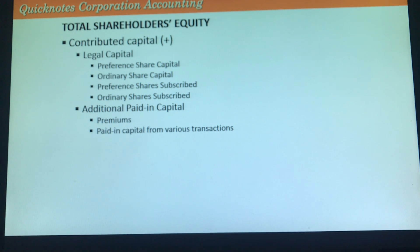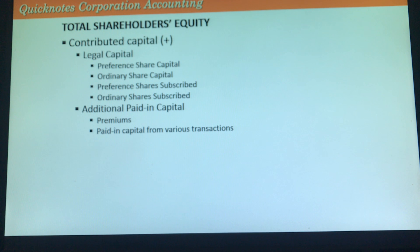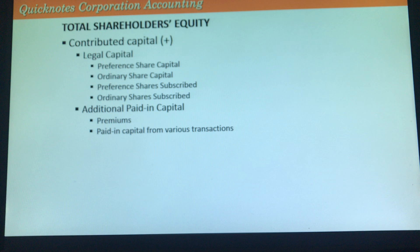Basically, the items that we report in legal capital are reported at par value. In additional paid-in capital, we have premiums — specifically preference share premium and ordinary share premium — and all other paid-in capital from various transactions. We have many kinds of additional paid-in capital, but these will not be thoroughly discussed in this video.